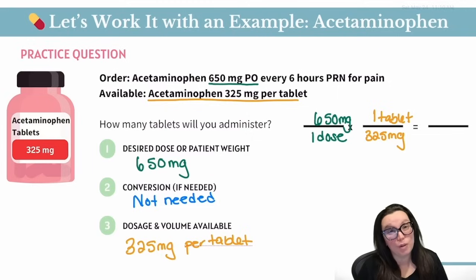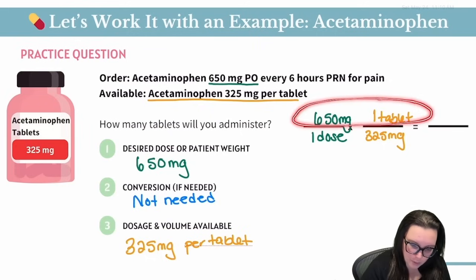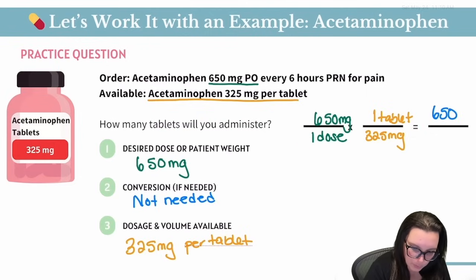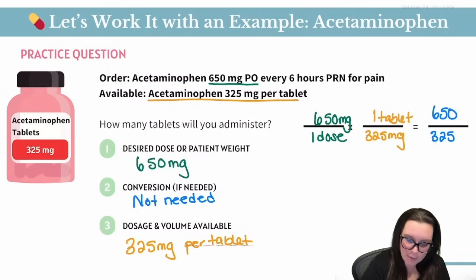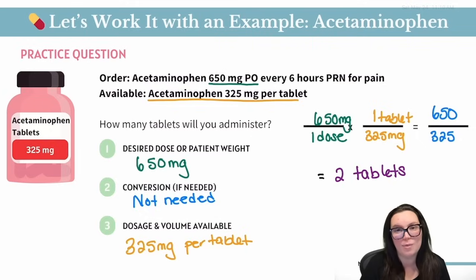Because we're multiplying fractions, we multiply both numerators together and both denominators together. On the top: 650 multiplied by one tablet gives us 650. On the bottom: 325 multiplied by one dose gives us 325. Now we do simple division, and that gives us our final answer of two tablets. So for this individual, we need to give them two tablets.